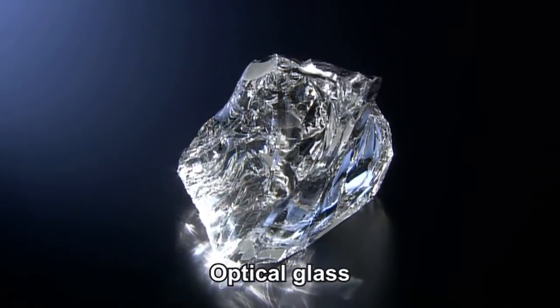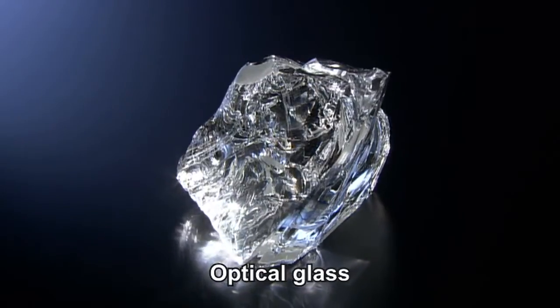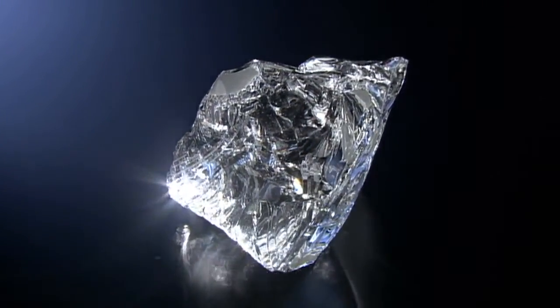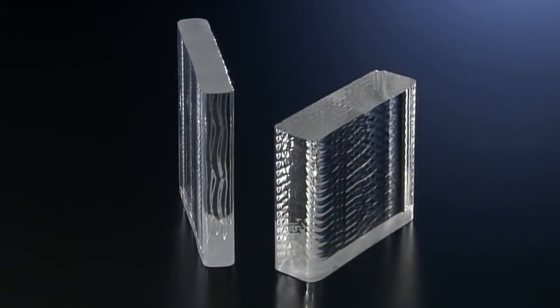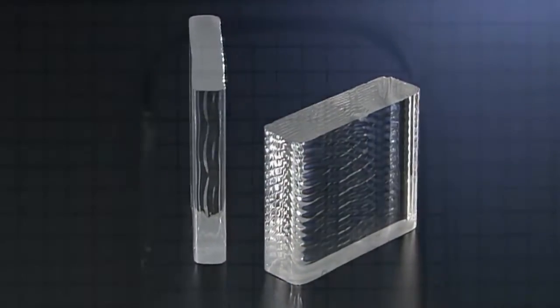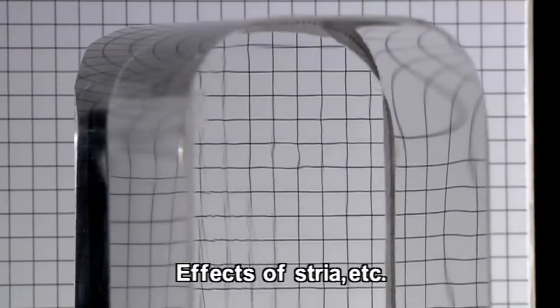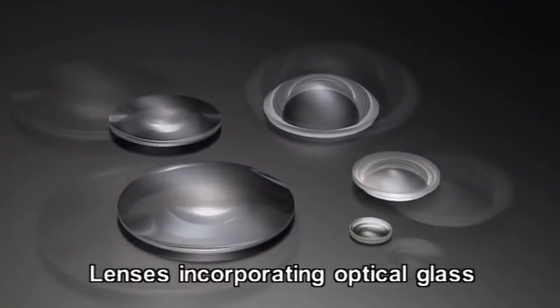Optical glass is created when the impurities are successfully removed. During the manufacturing process, cracks or irregularities called stria sometimes appear. Only glass free of such irregularities is used as optical glass.